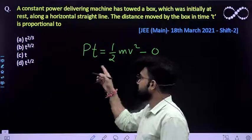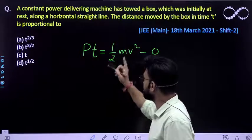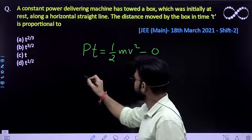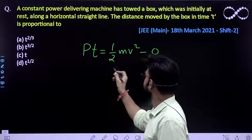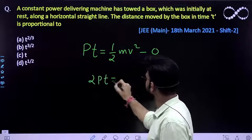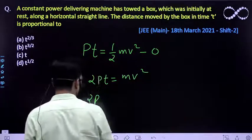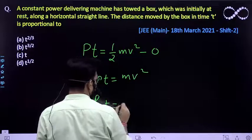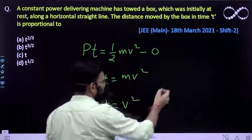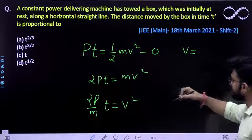Now what things are constant here? Power is already constant, mass is already constant, 2 is a numerical constant. So bringing this to the other side, you will be getting 2Pt equals m v squared. So bringing this to the other side, 2P by m, this constant equals v squared. Again solving this further, v comes out to be, v in terms of t has already come.